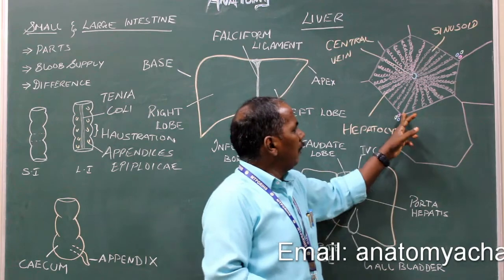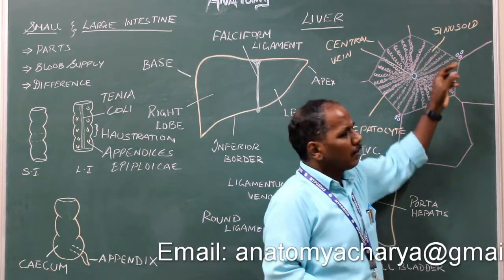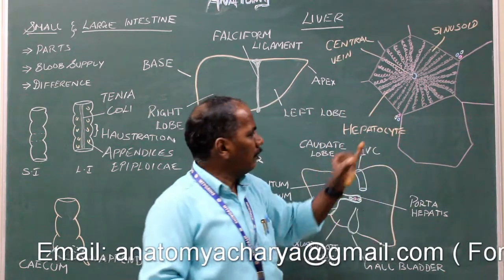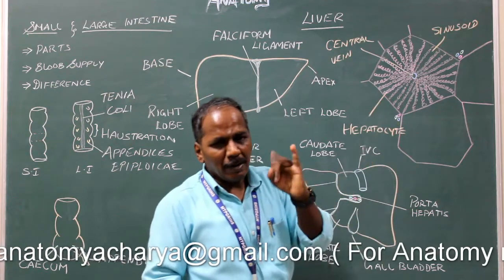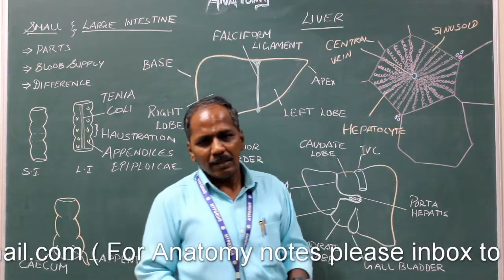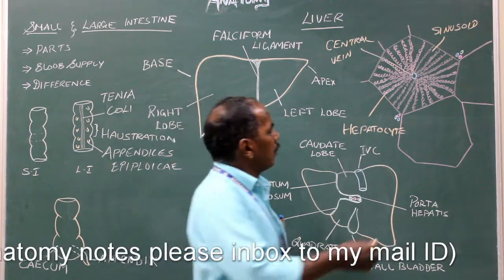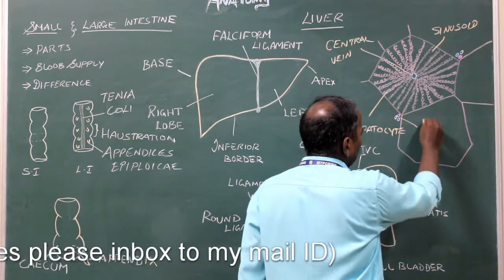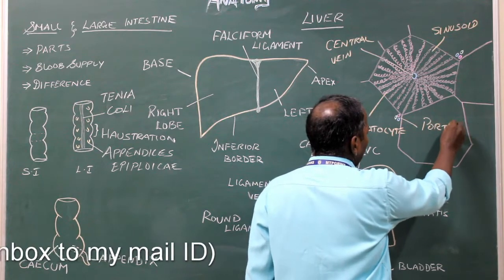On the angle or edge of the lobule, you can see a branch of hepatic artery, a branch of portal vein, a branch of hepatic duct. These structures together form portal triad.